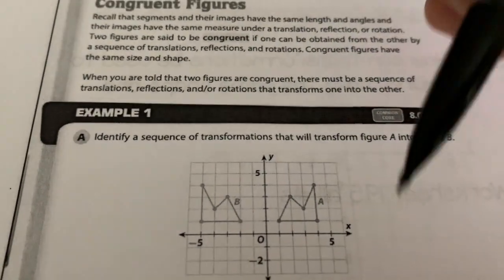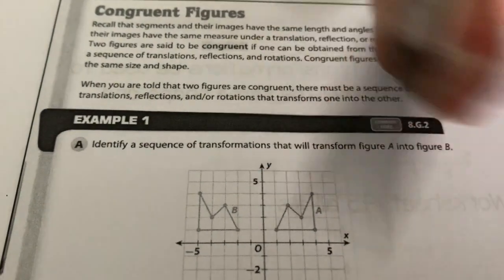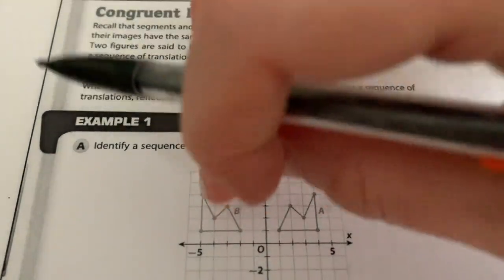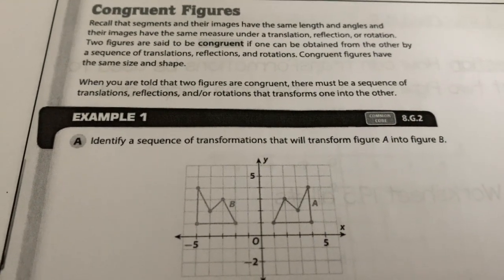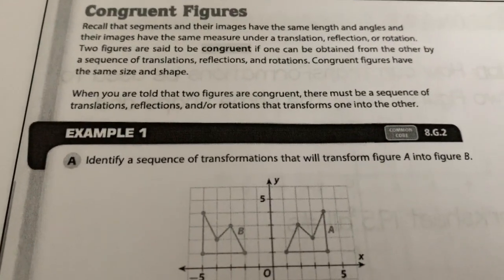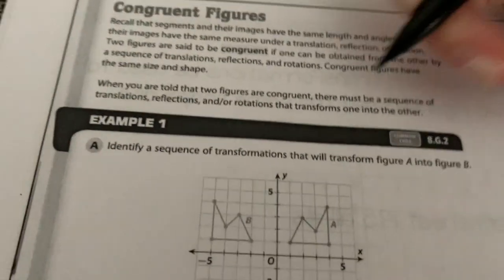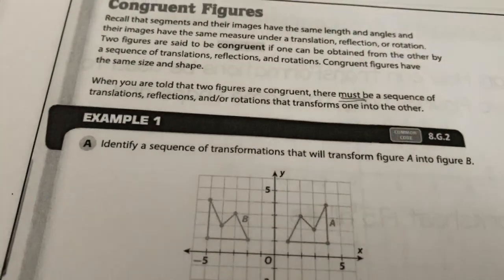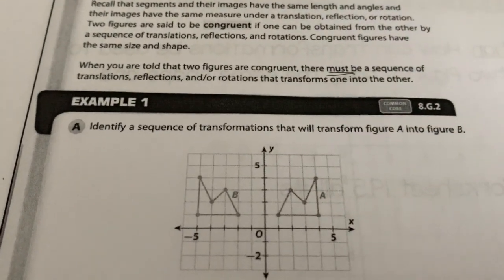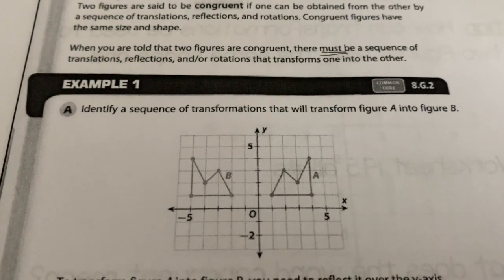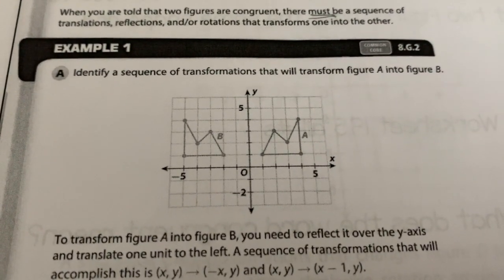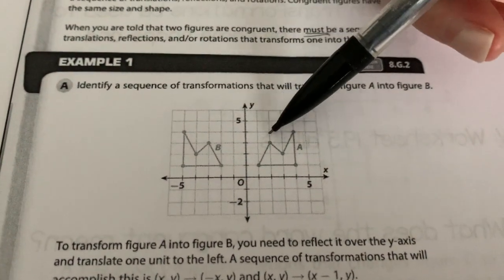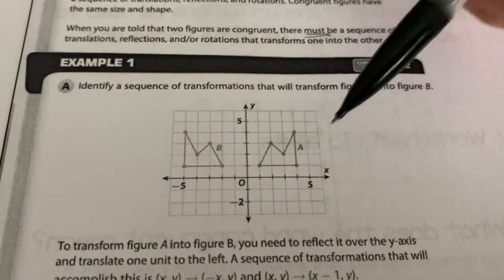So basically if you can take one of these and you can translate it and rotate it and reflect it and it'll map right exactly onto it, then that means that they're congruent. So if we're told that two figures are congruent, that means that there must be a sequence of these transformations that will make one of them onto the other one. So in this lesson, what you're going to be able to do is you're going to be able to decide what exactly that would be.